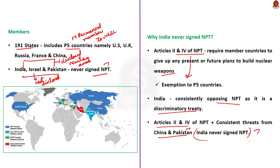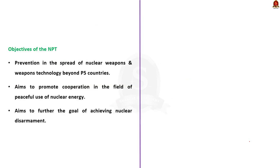Why did India never sign the NPT? Articles 2 and 4 of the NPT require countries to give up any present or future plans to build nuclear weapons, but the same articles exempt P5 countries from such requirements. India consistently opposes the NPT, terming it a discriminatory treaty. Because of these articles and the consistent threats posed by neighbors such as China and Pakistan, India has never signed the NPT. The objectives of NPT are: to prevent the spread of nuclear weapons beyond P5 countries, to promote cooperation in peaceful uses of nuclear energy, and to further the goal of achieving nuclear disarmament.